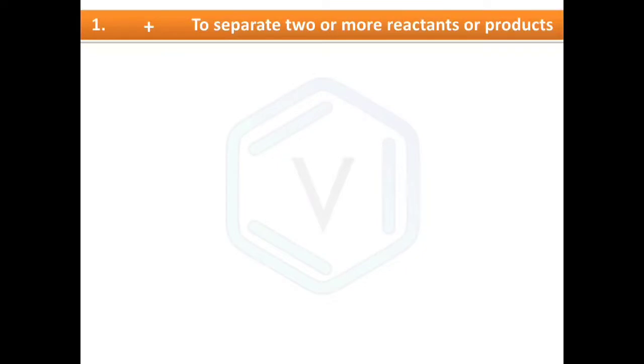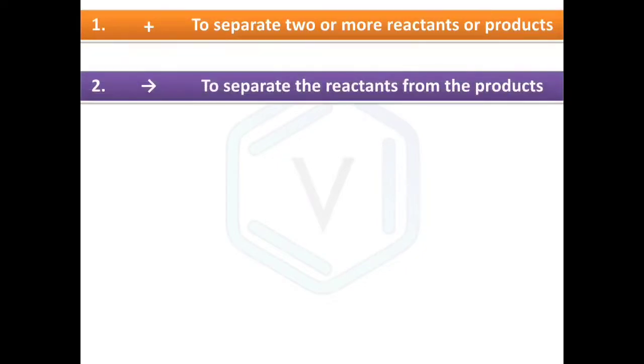Plus symbol is used to separate two or more reactants or products. Arrow is used to separate the reactants from the products.